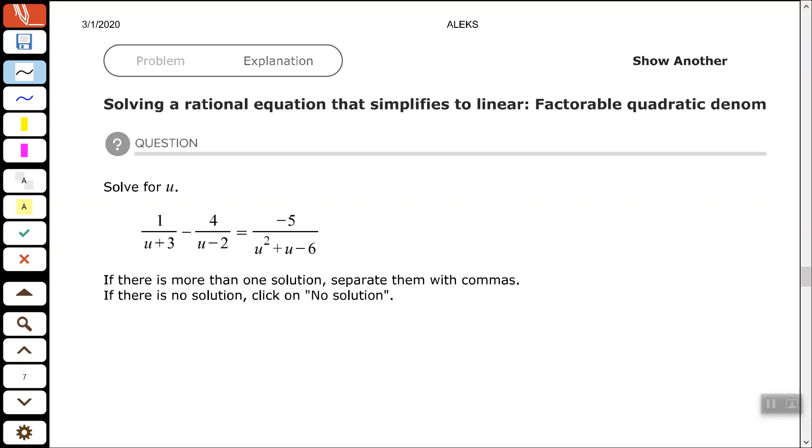If you have denominators that can be factored, go ahead and factor those denominators. So we're going to factor that trinomial there. Factors of negative 6 that would add up to be the middle coefficient of 1 are positive 3 and negative 2.